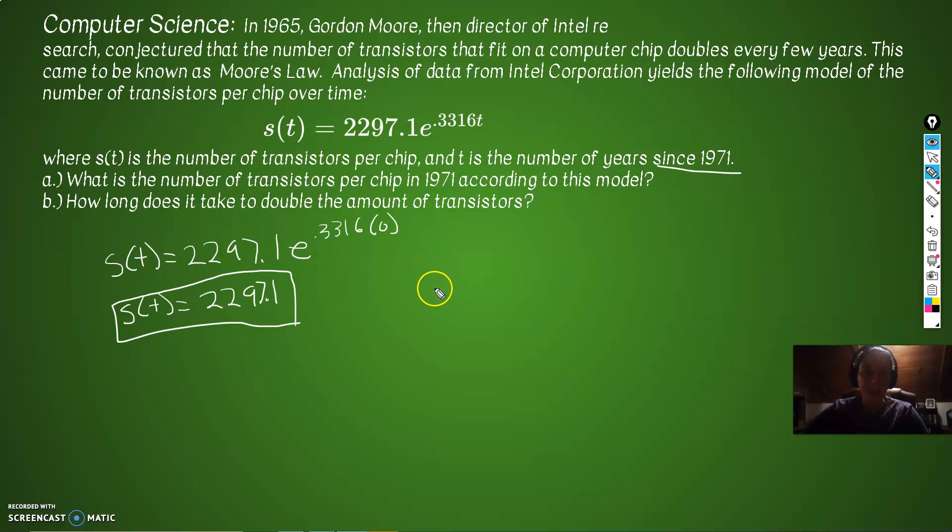So B, how long does it take to double the amount of transistors? So double. So if this is our starting, then to double would be that times 2. So our amount that we're looking for is whatever 2297.1 times 2 is, which is 4594.2. Okay, so how long is it going to take to get to that number? 4594.2, that's the amount. Equals 2297.1 times E to the 0.3316 times T, which is what we're trying to figure out.